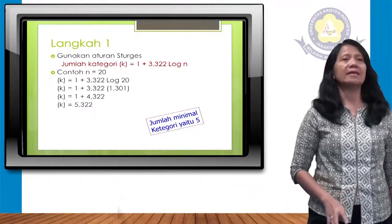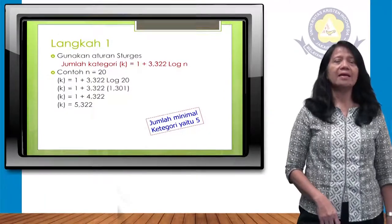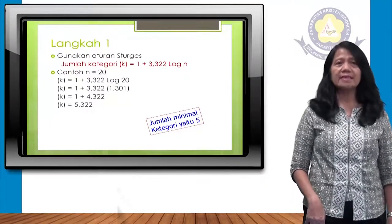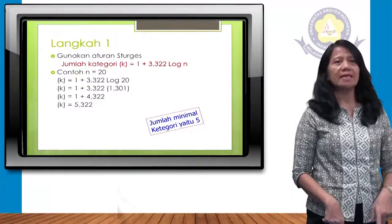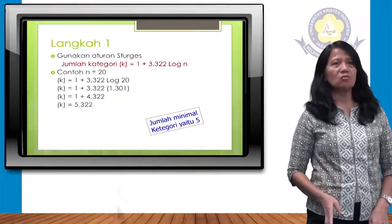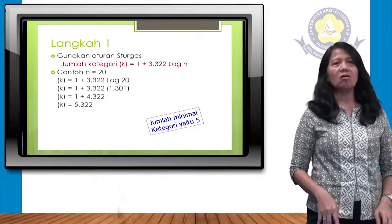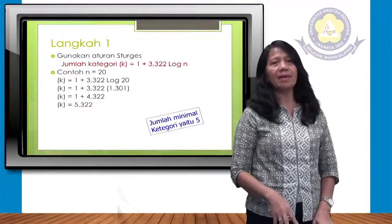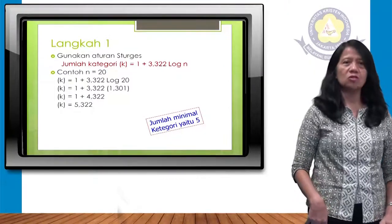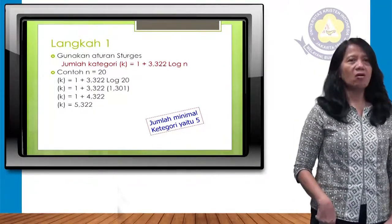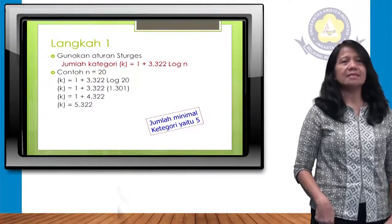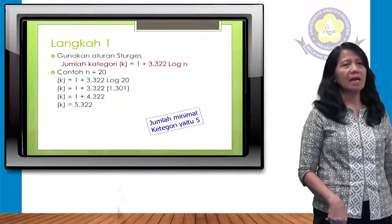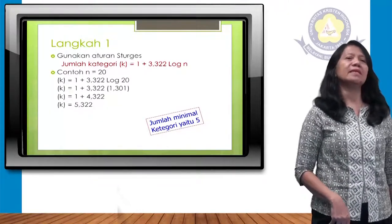Rumus Sturges: jumlah kategori K = 1 + 3,322 log N. N di sini, dari contoh tadi, perusahaan ada 20. Jadi kita masukkan ke rumus: 1 + 3,322 log 20. Log 20 hasilnya adalah 1,301. Jadi 3,322 dikali 1,301 hasilnya 4,322, ditambah 1 menjadi 5,322. Artinya menjadi 5 kelas.